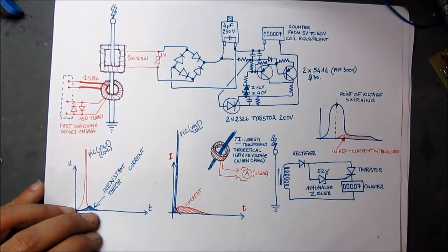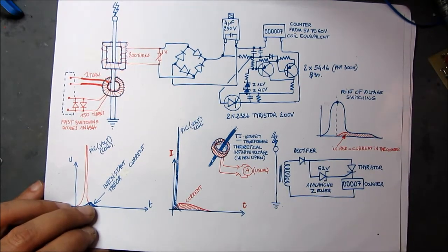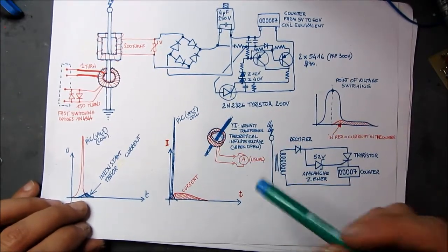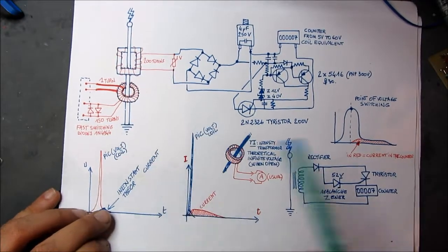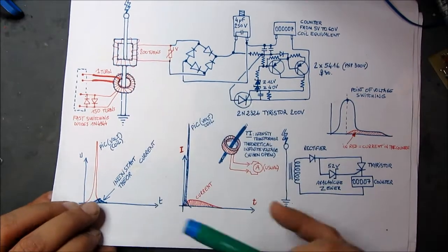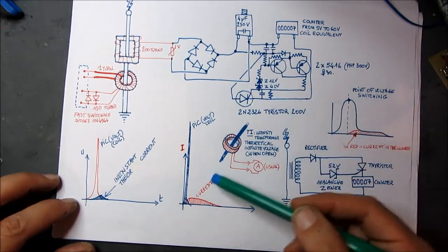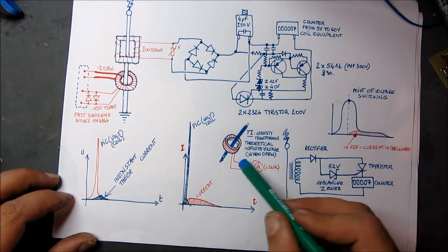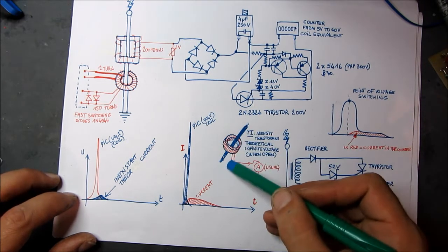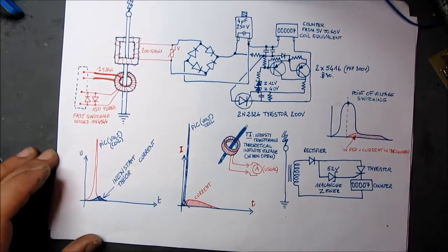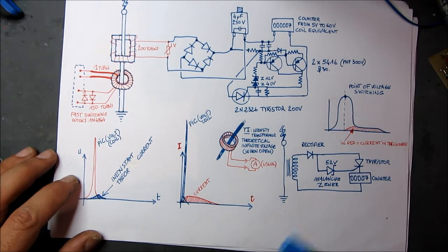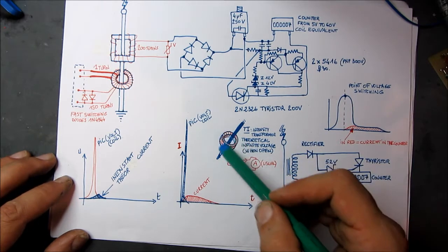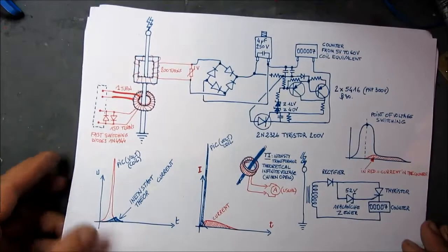What you need to know is that this clamp meter is actually what we call in French a 'transformateur de courant' or in English an intensity transformer. Theoretically, it has an infinite voltage at the output because this device is made to transform the current of one wire. Theoretically, when the loop is open you will have infinite voltage at the output — this is the reason why, in industry, manufacturers tell you that you must not leave the loop open, because it can destroy the transformer.